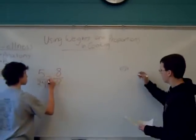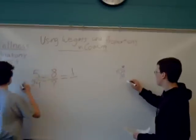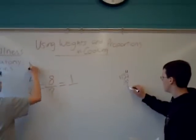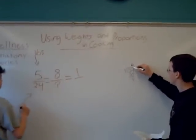5 into 24, 4 times. 5 times 4 equals 20. And then 24 minus 20 equals 4. We then add a zero down here, or a decimal down there, a decimal right here.